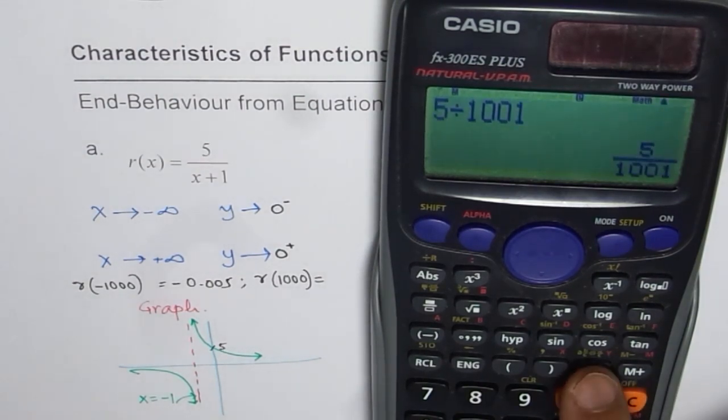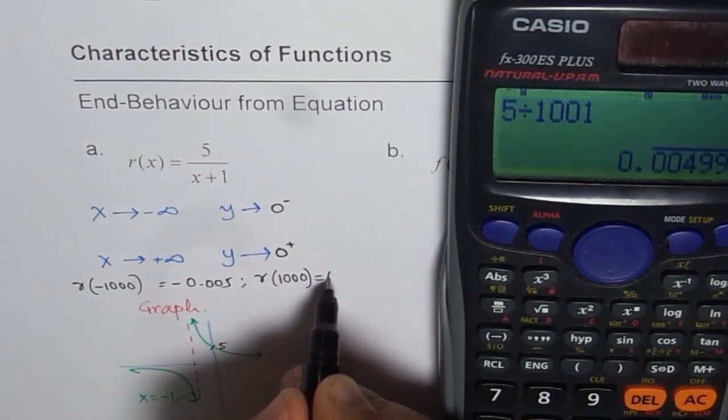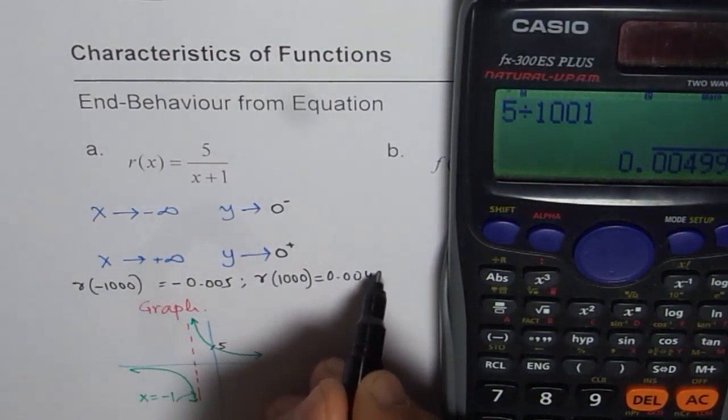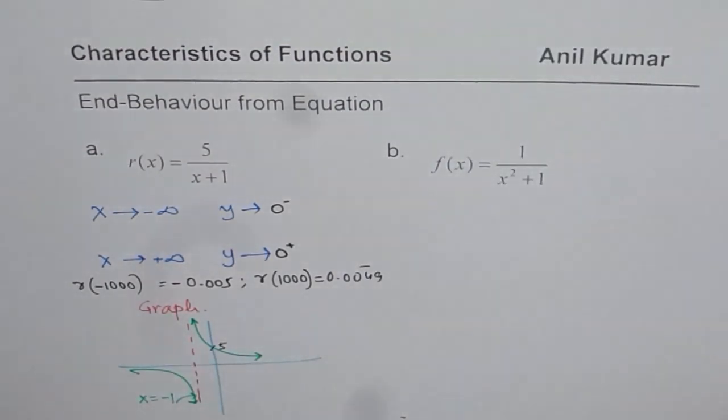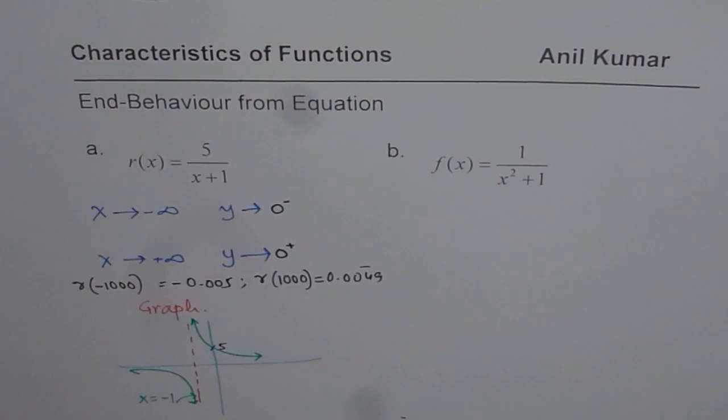And that is a positive large value, I mean small value, which is 0.0049 something. Very close to 0, but positive in nature. So that is how you could actually get the end behavior by simple calculations, correct?